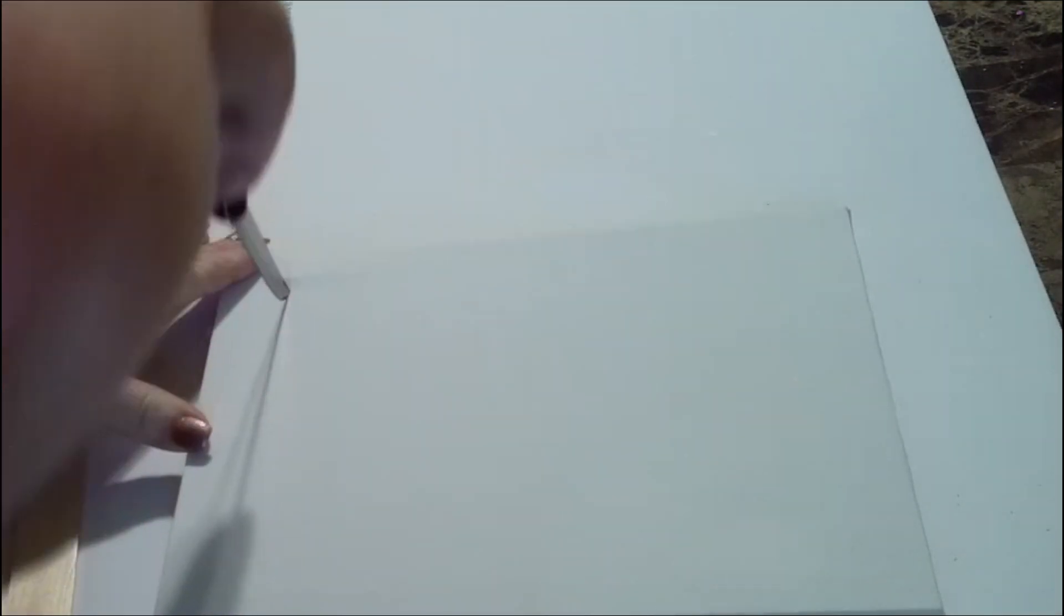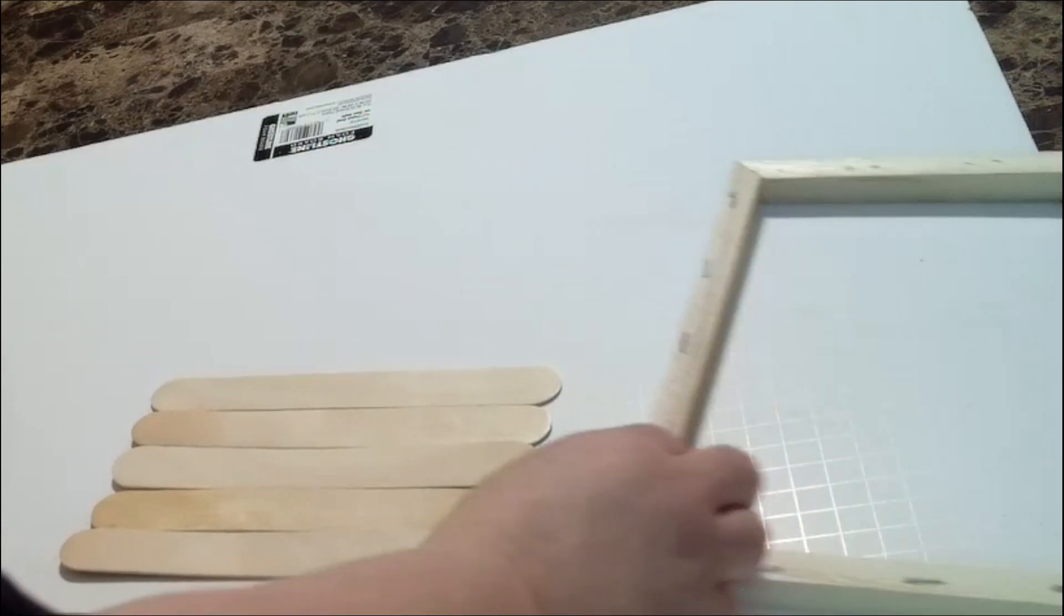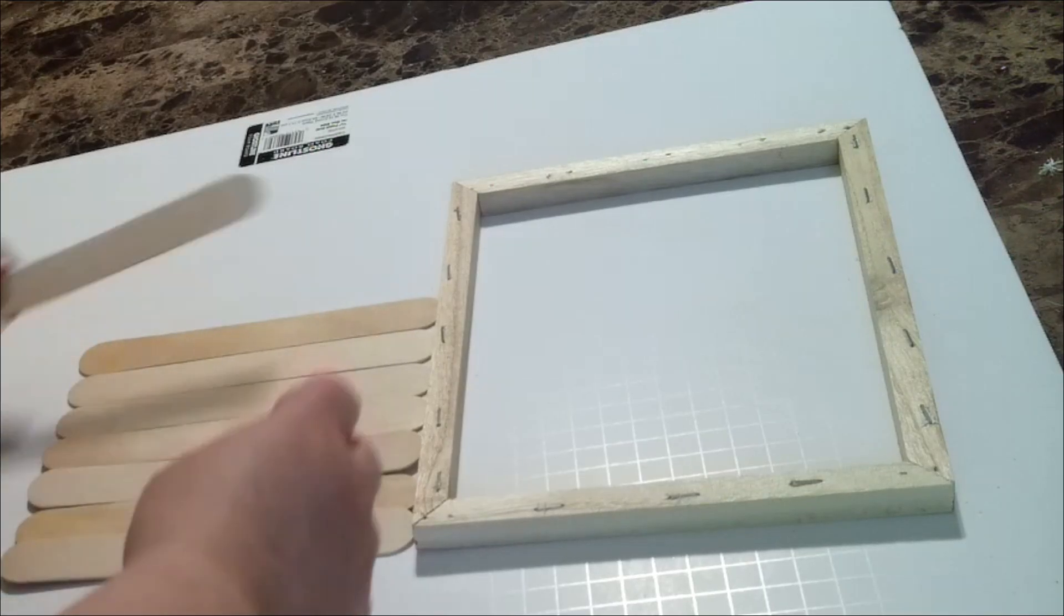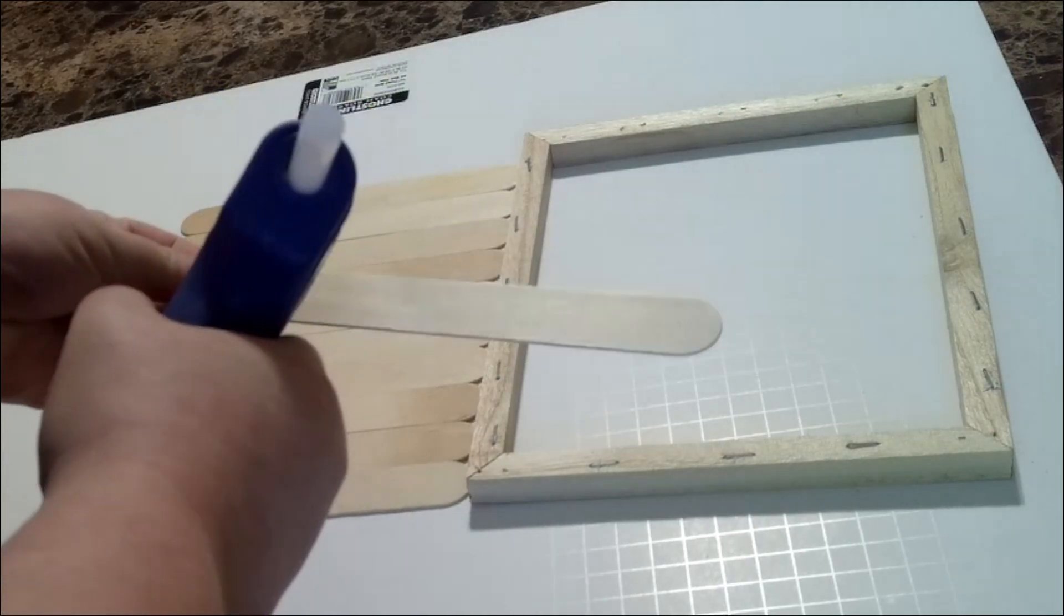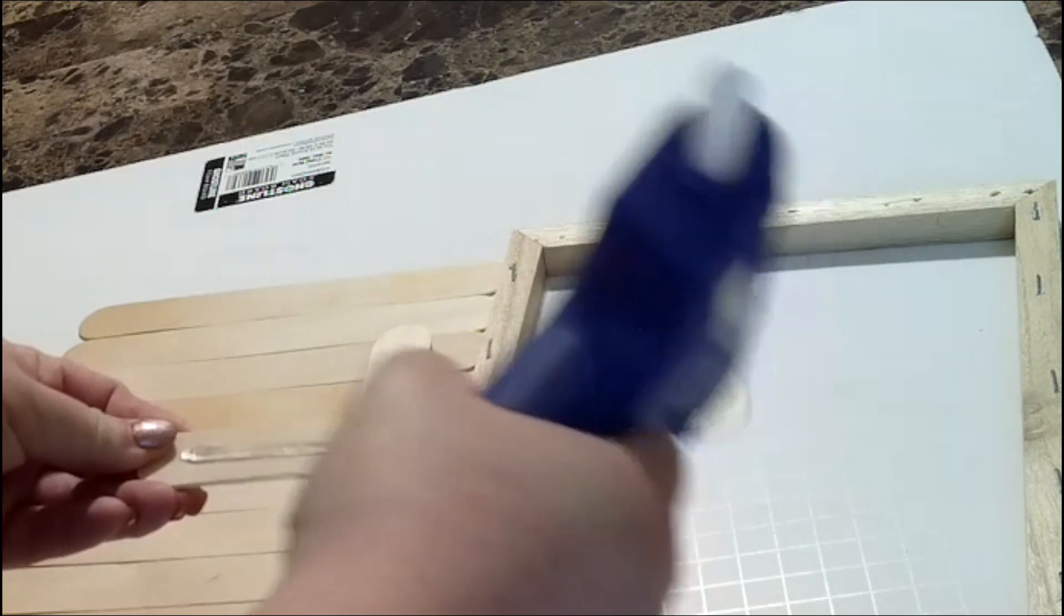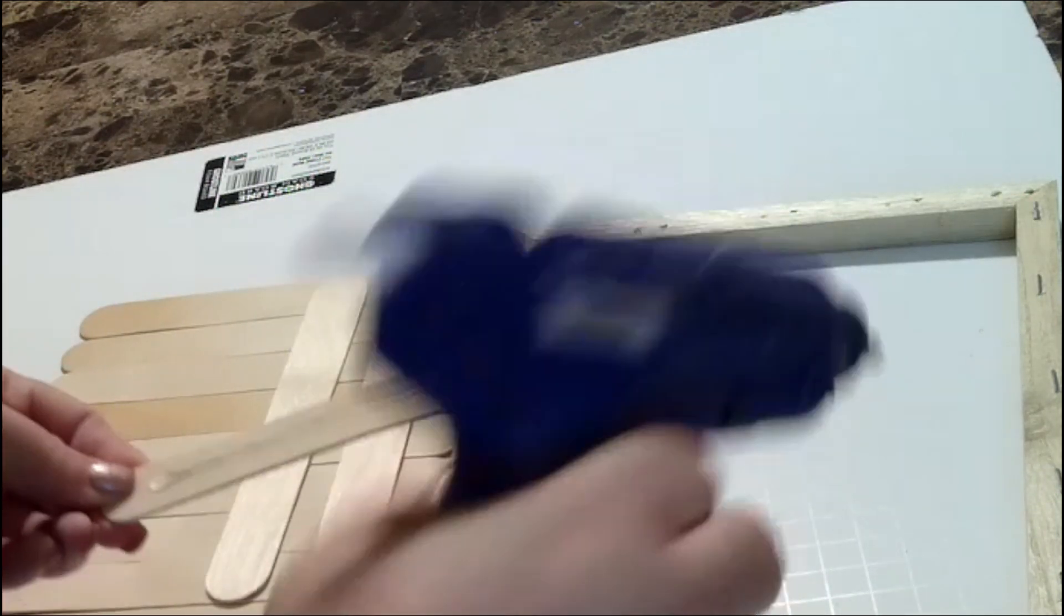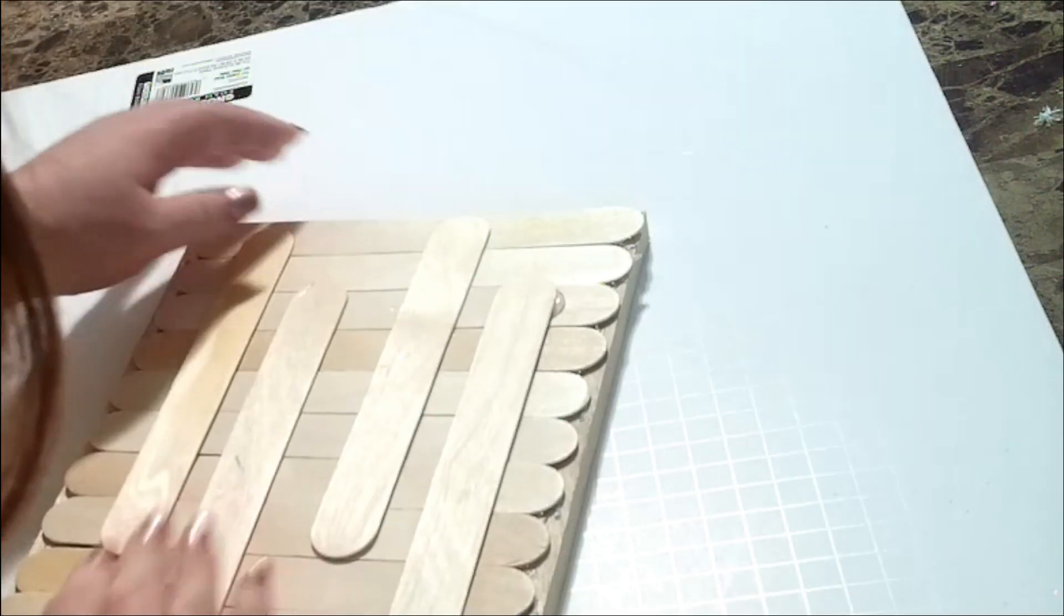To start this first project, we're going to be using a canvas that I purchased from Dollar Tree. We're actually going to remove the canvas part of it and just use the outside frame. I'm also going to be using these large popsicle sticks that I got from Walmart. I'm going to stack them up in a row on top of each other and then take some more popsicle sticks and glue them onto the back so they all form one solid unit.